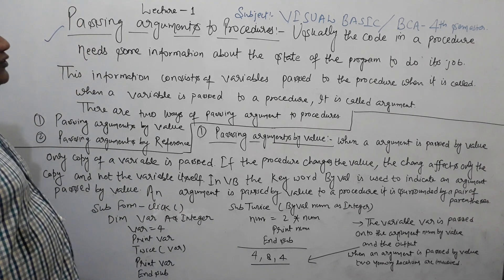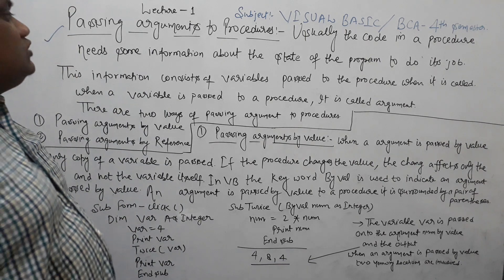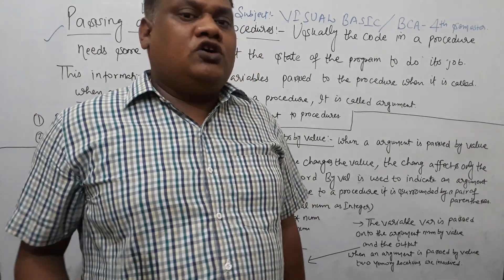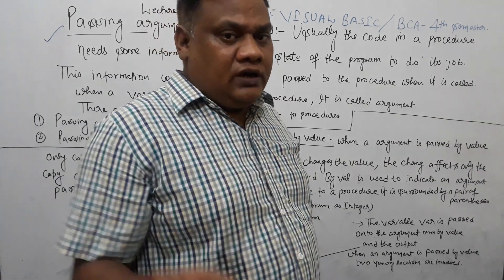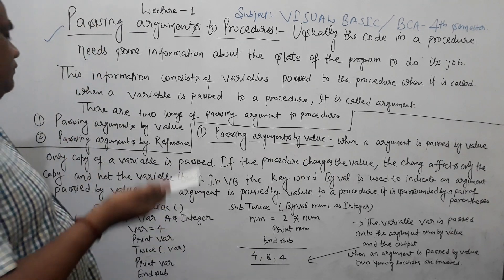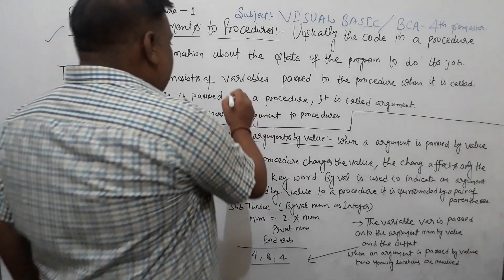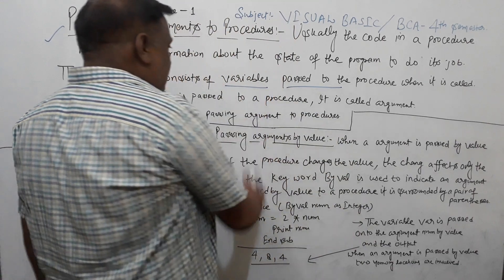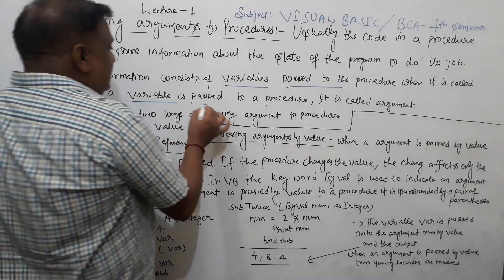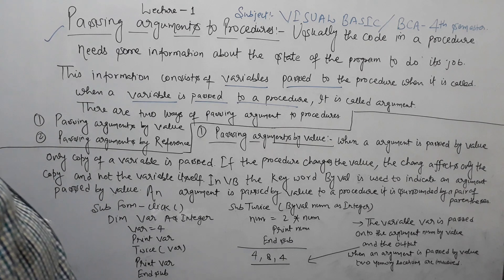What is passing arguments to a procedure? Usually the code in a procedure needs some information about the state of the program to do its job. Procedures and functions need information passed to them. This information consists of variables passed to a procedure. When a variable is passed to a procedure, it is called an argument.